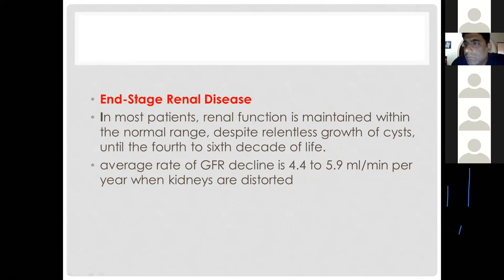Chronic kidney disease is more common in males than females with ADPKD, and the rate of GFR loss is approximately 4.5 to 5.9 mL per minute per year once kidneys are distorted. Patients diagnosed in later stages have less chance of progressing to end-stage kidney disease early, while those diagnosed younger will reach end-stage disease sooner.